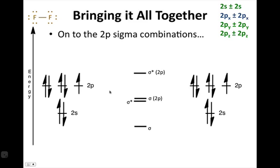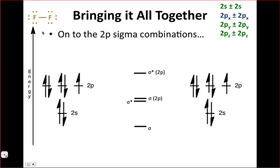Now let's look at the 2p-sigma combination. Notice the two fluorines do have 2p orbitals that are pointing directly at one another, and that's the px combination. So 2px plus 2px is actually a sigma combination.